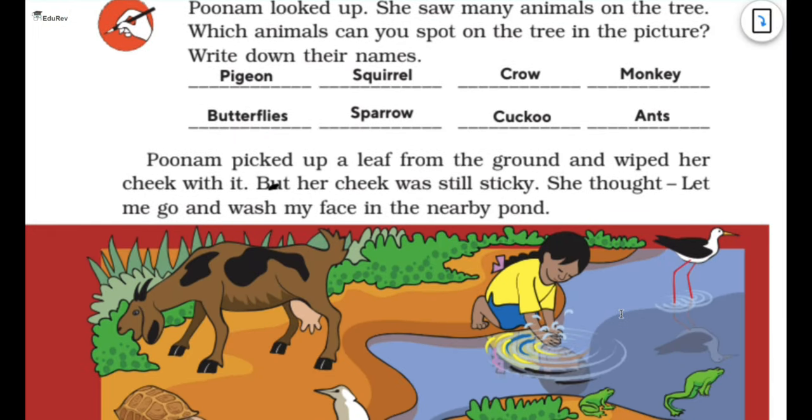Now Poonam looked up. When something fell on her face, she actually looked up and saw many animals on the tree. We just saw there were so many animals on the tree. Which animals can you spot on the tree in the picture? Write down their names.